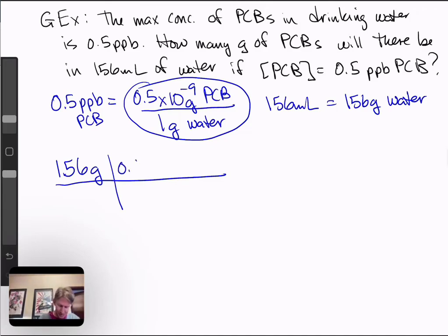But then, 0.5 times 10 to the minus 9 grams of PCB per 1 gram of water.